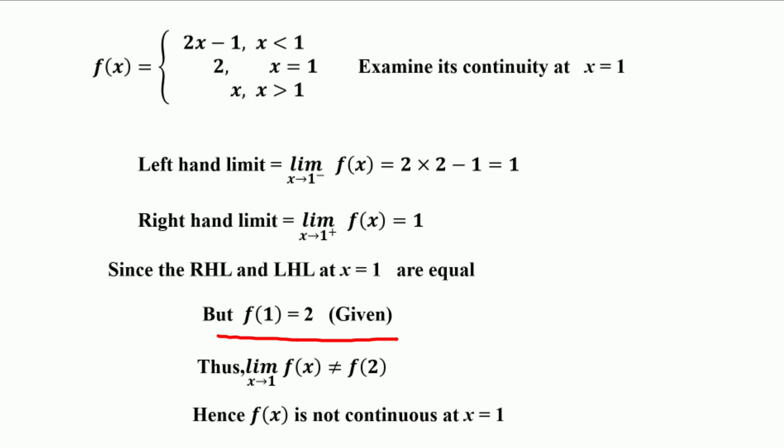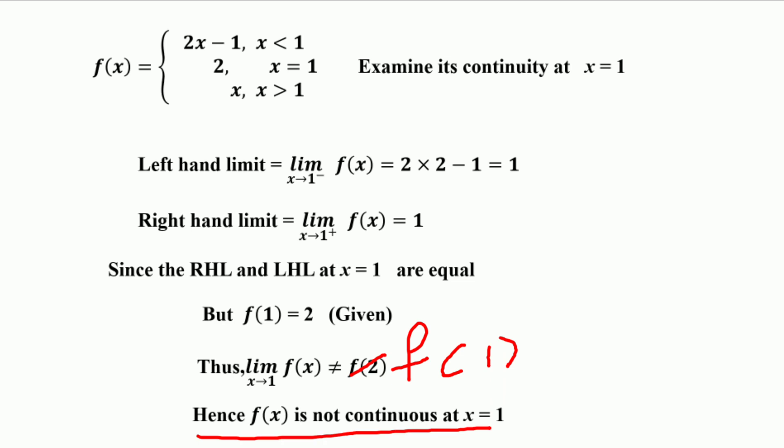But what is f(1)? f(1) is already given as 2. Thus the limit of f(x) equals 1 but f(1) equals 2, so the limit f(x) is not equal to f(1). Hence f(x) is not continuous at x = 1. However, if we define f(1) = 1, then f(x) is continuous at x = 1. This type of discontinuity is called removable discontinuity, because we can remove it by redefining f(1) = 1, making f(x) continuous at x = 1.